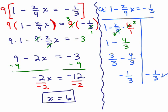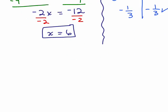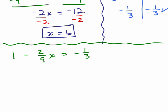I'm going to go over the exact same problem, but what we're going to do is not multiply by the least common denominator, so we have 1 minus 2 9th x equals negative 1 3rd. So I could subtract 1 from both sides.